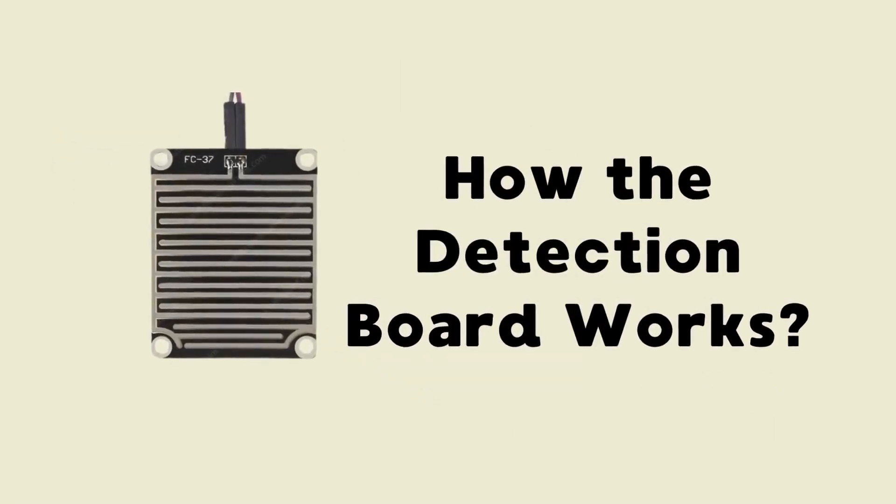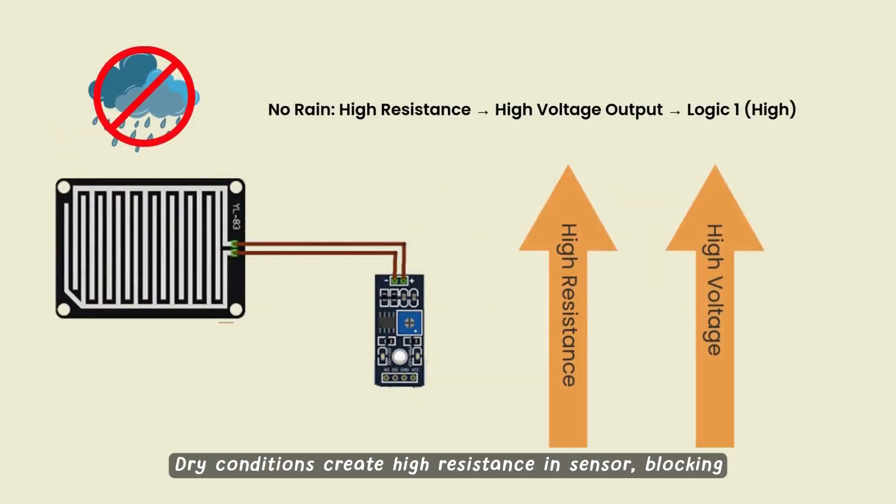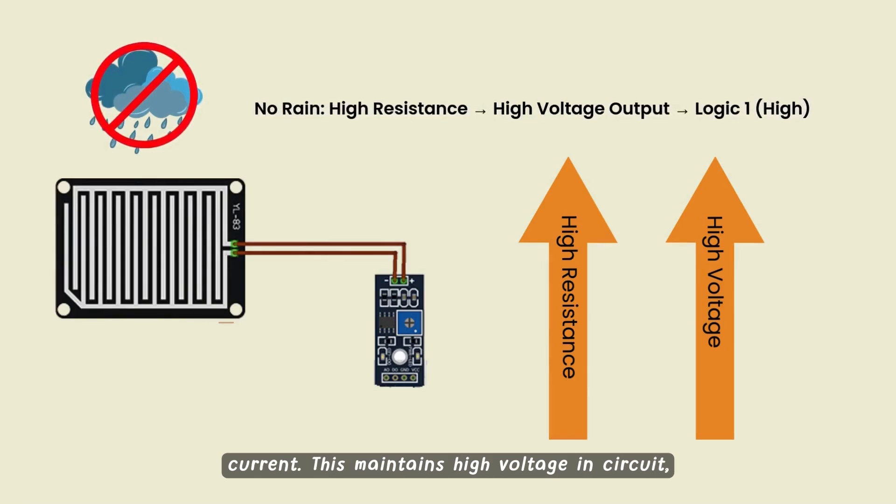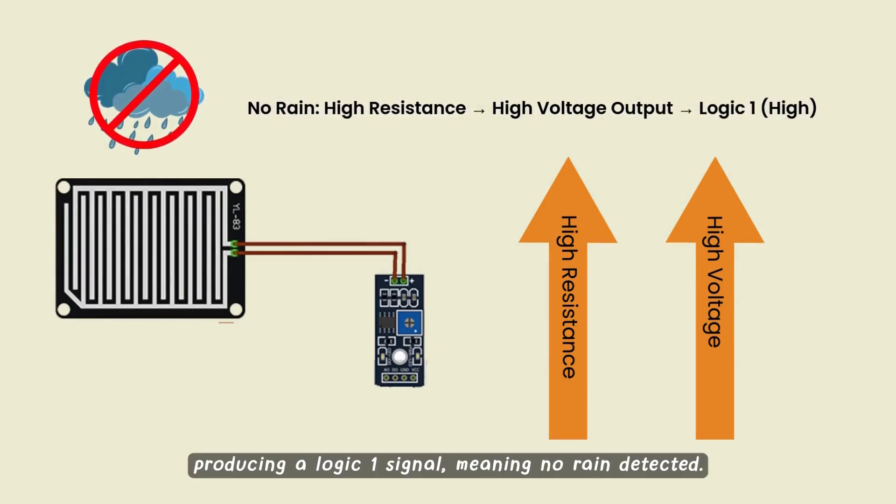So, how does the detection board work? Dry conditions create high resistance in the sensor, blocking current. This maintains high voltage in the circuit, producing a logic 1 signal, meaning no rain detected.